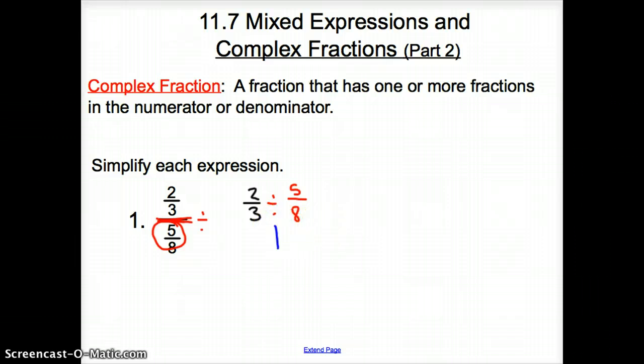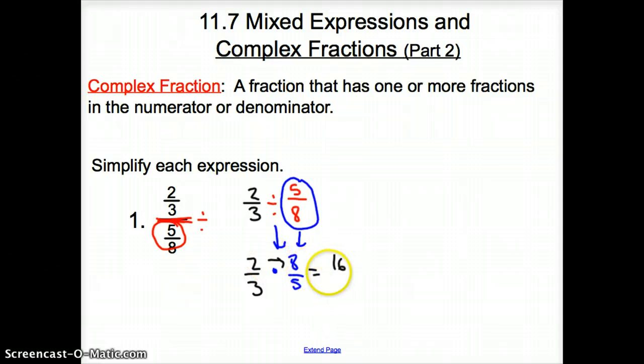When we divide, that turns into multiplication, and then when we multiply, we have to flip the second guy, and so now that turns into eight-fifths, and now we bring down the first guy, which is two-thirds. There's nothing that we can cancel out,